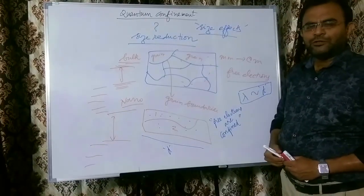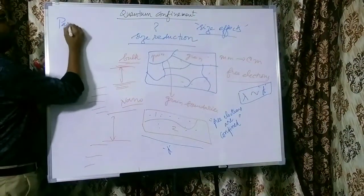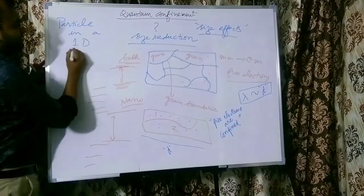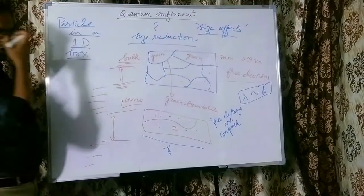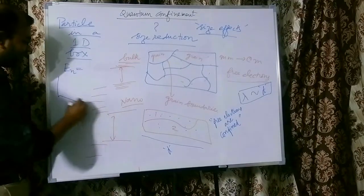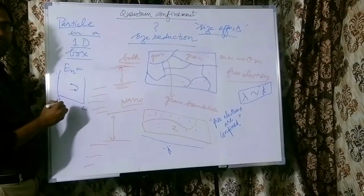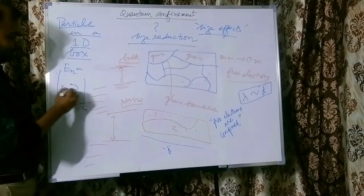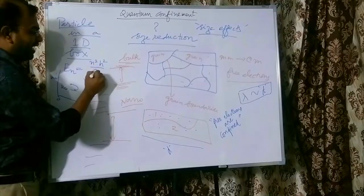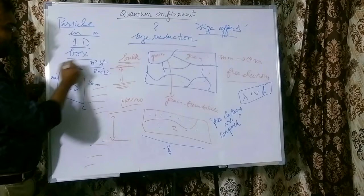We know in quantum mechanics, one of the first problems that we do is what is called particle in a one-dimensional box. For those of you who are not very familiar with this concept, please refer to my other video on this topic — particle in a one-dimensional box. In that video, we have derived the energy levels for an electron confined — or any other quantum object — confined in a box of dimension L. If there is no potential inside the box, the potential is zero and outside the potential is infinite, then the energy level expression is E = n²h²/8mL².